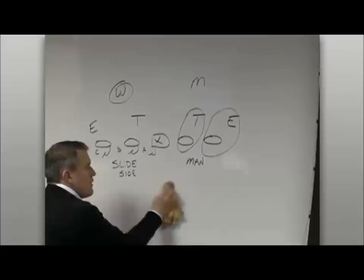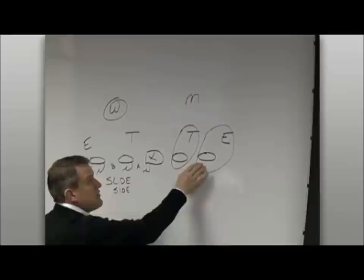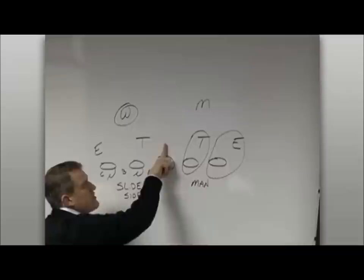So in this particular protection, we're in five-man. The call that we've made tells them the man side is to the right, the slide side to the left. On the man side, we're manning the two down linemen. So we start from the center out. That's the first down lineman, that's the second. So we're manning one and two. These two man them.